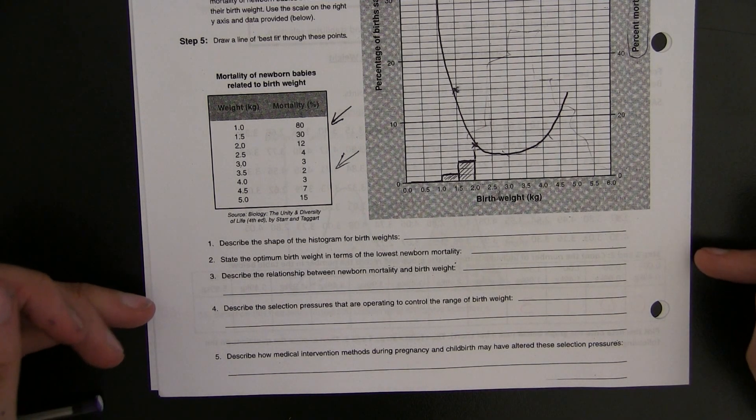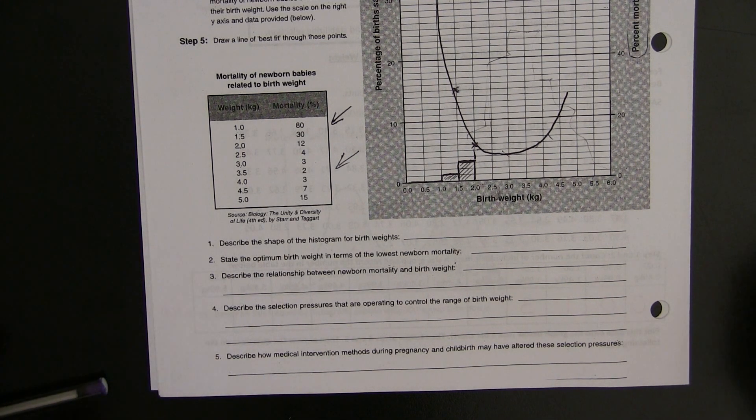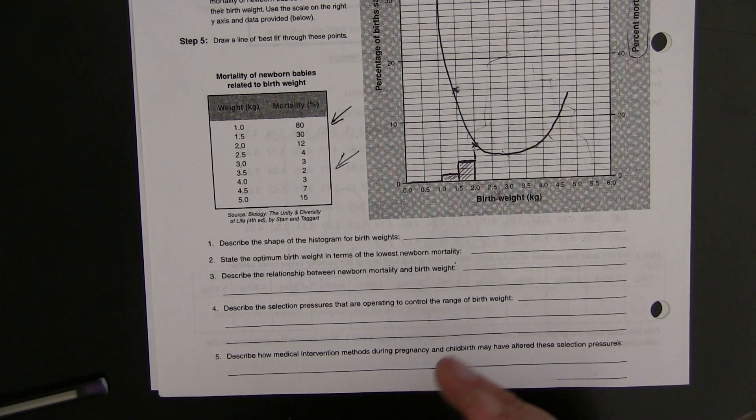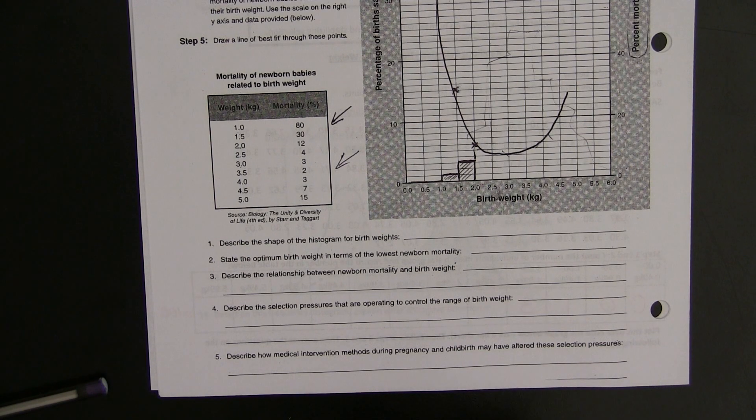Describe the relationship, the selection pressures. This question, question 4, is really asking you, why is it that it is better for babies to be born of intermediate weight and not really light or really heavy? That might be something you need to look up.